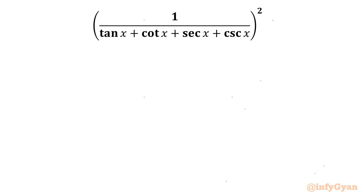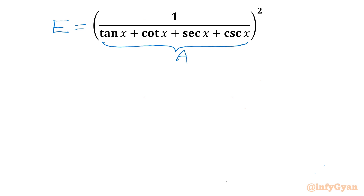Welcome back to Infigyan, my dear friends. In this very exciting and challenging video on Trigonometric Expressions, we have to simplify 1 over (tan x + cot x + sec x + cosec x), whole square. Let's get started by considering the given expression equal to E. I will call this bracket equal to A, so ultimately we have to calculate A square.